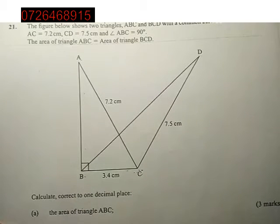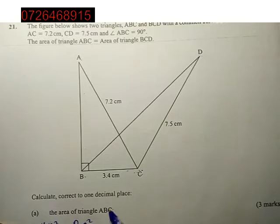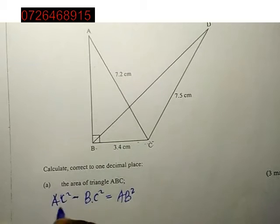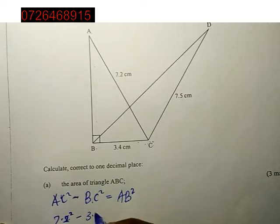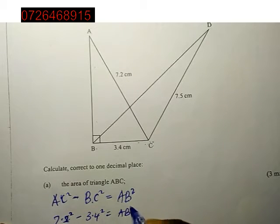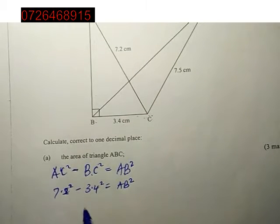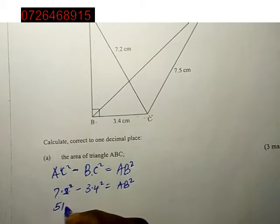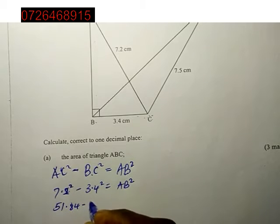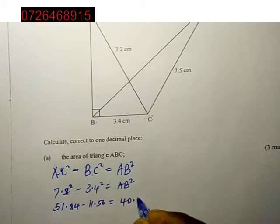So, AC squared minus BC squared will give us AB squared when we subtract. Because the hypotenuse squared minus this will give us this. So 7.2 squared minus 3.4 squared will be AB squared. This will give us 51.84 minus 11.56 and this equals 40.28.